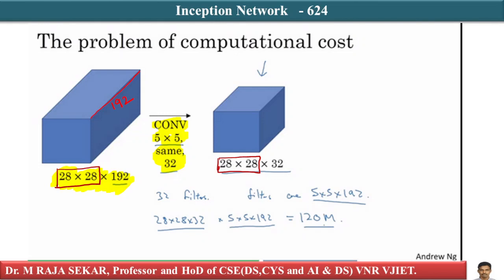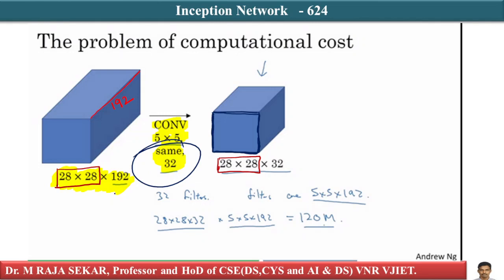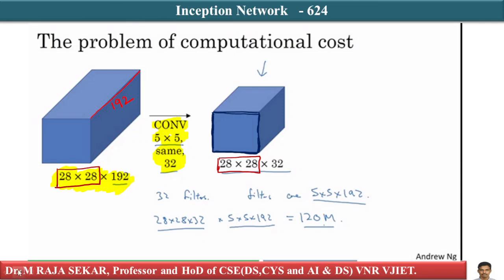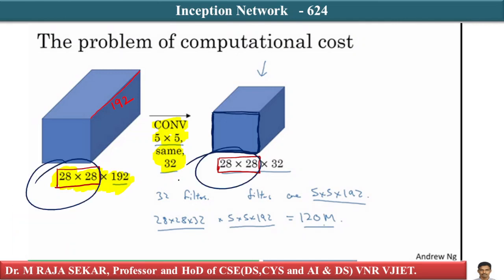What does my output look like? Because I am using same padding, the output spatial dimensions will be the same as the input. The input size is 28×28, and the output size is also 28×28.